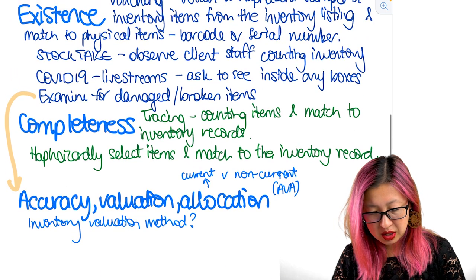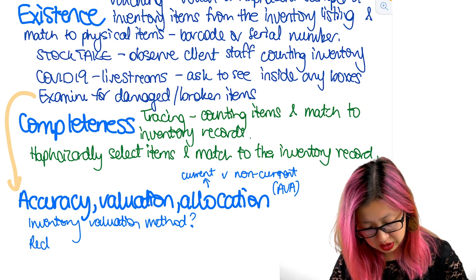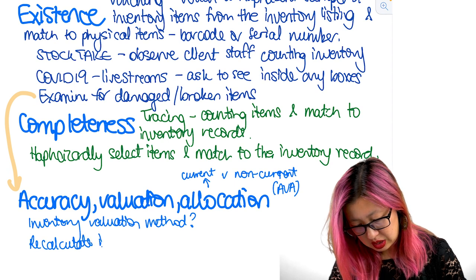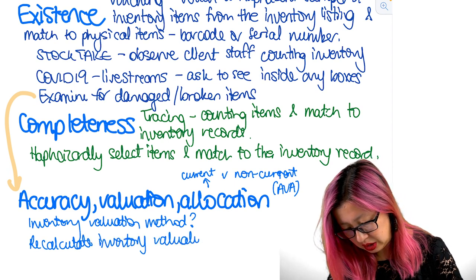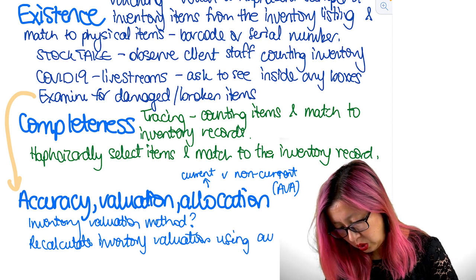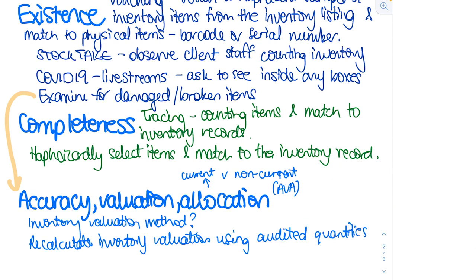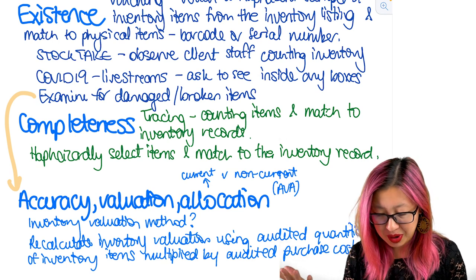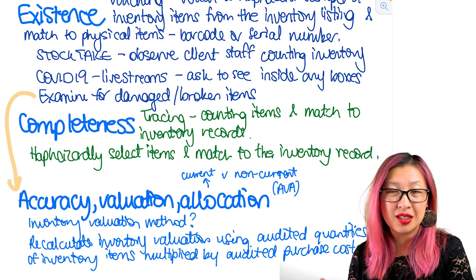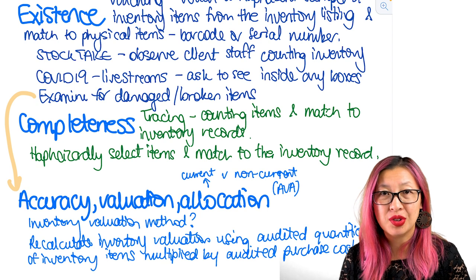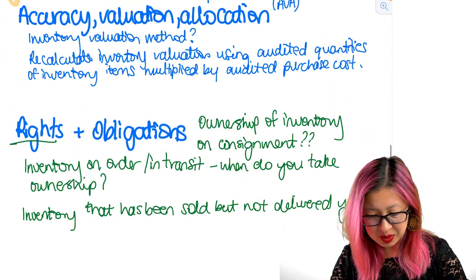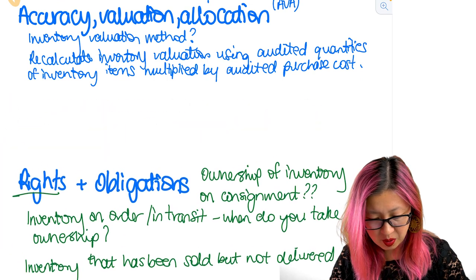So you have to first understand the inventory valuation method then you're going to need to look at the counts. So we're going to need to recalculate inventory valuation using audited quantities of inventory items multiplied by audited purchase cost. Now of course that's really simple assuming that everything was purchased for the same price but you're going to need to figure out what inventory is still in existence that was there, how much was it purchased for, and is it valued correctly. So that's going to be a little bit of management accounting there.